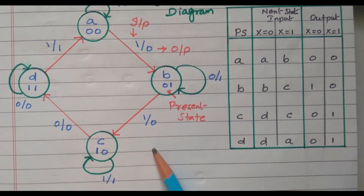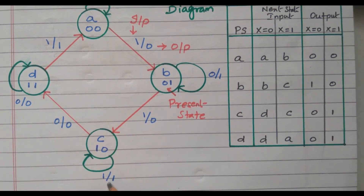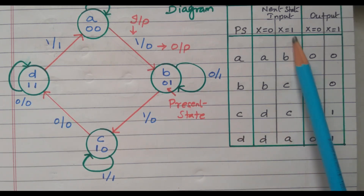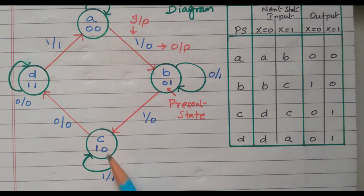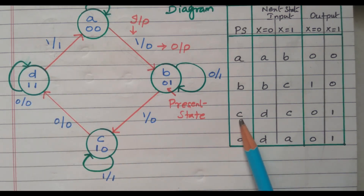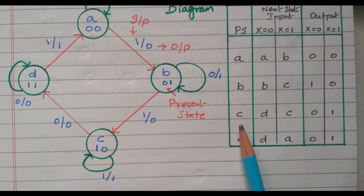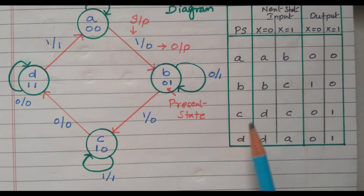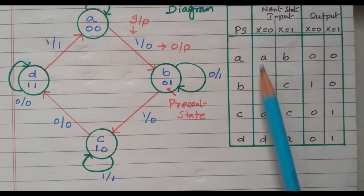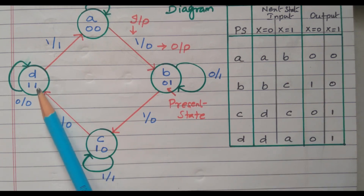For state C: when x equals 1, C goes to C itself and the output is 1. When x equals 0, C goes to D and the output is 0. So C goes to C when x equals 1 with output 1; C goes to D when x equals 0 with output 0. This state diagram is represented in pictorial form, and the same information is given in tabular form as the state table.